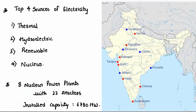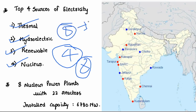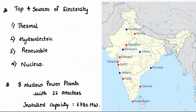Let's start with nuclear power in India. Nuclear power is the fourth largest source of electricity in India. First is thermal, that is coal. Second is hydroelectric. Third is renewable. And fourth is nuclear. Totally, India has eight nuclear power plants with 22 reactors in total.